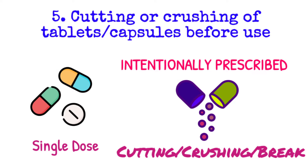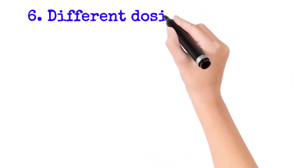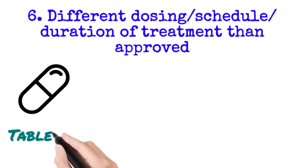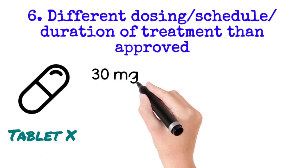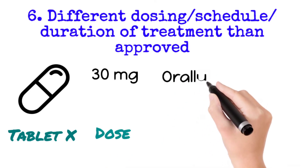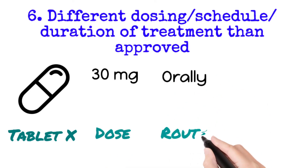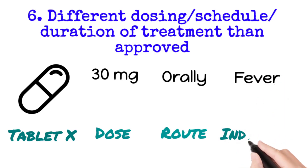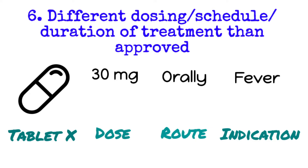The next scenario is different dosing, schedule, or duration of treatment than approved. For example, tablet X is approved to be consumed by a patient at a dose of 30 mg via oral route of administration and for the treatment of medical condition fever. This is the approved combination of tablet X to be prescribed to a patient by a doctor. In simple language, tablet X can only be consumed or prescribed at a dose of 30 mg via oral route and for fever.